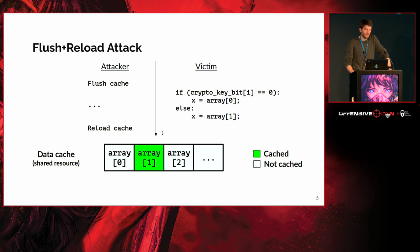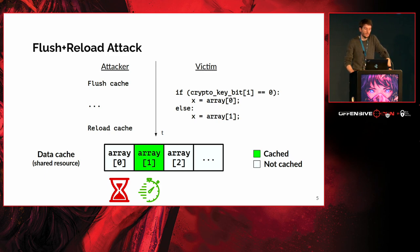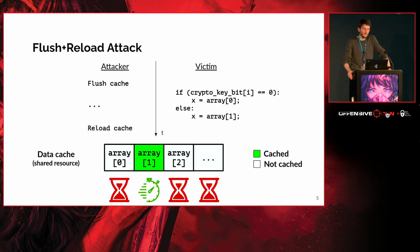Later, the attacker just needs to perform the reload step — simply measuring the load time of every array entry. As you can expect, the first load will be quite slow because array zero is not in the cache. The second one will be much faster because the victim already brought the first entry into the cache, and the others will also be slow. By observing this timing side channel — this timing difference of load operations — we can infer that the crypto key bit at position i was equal to one.